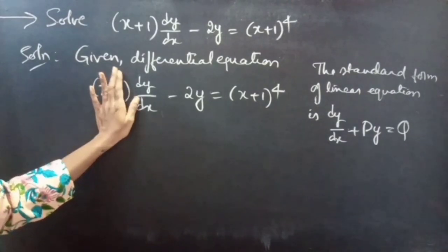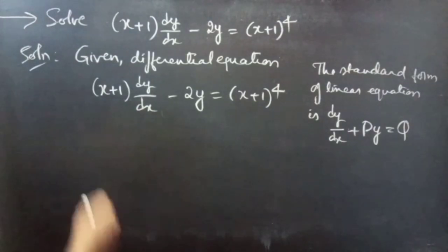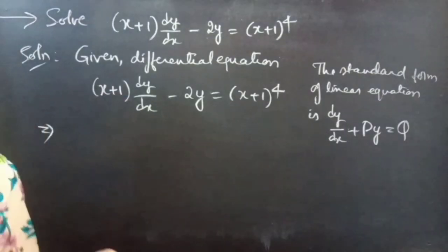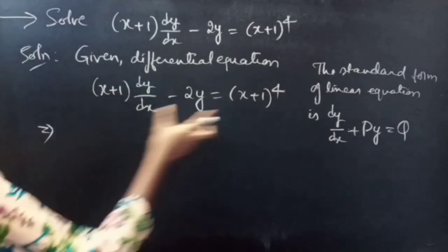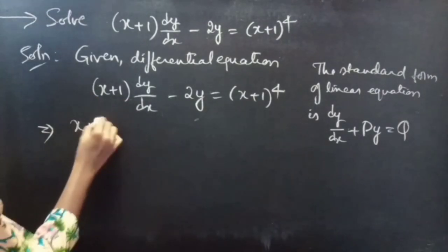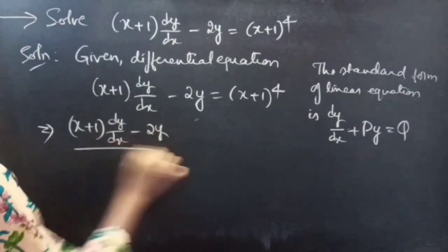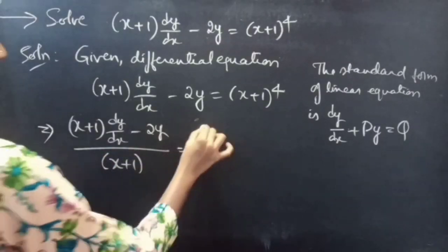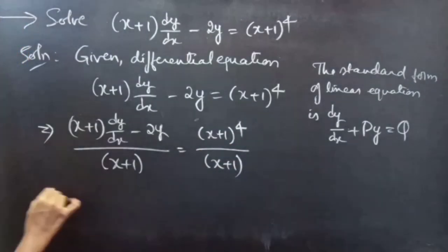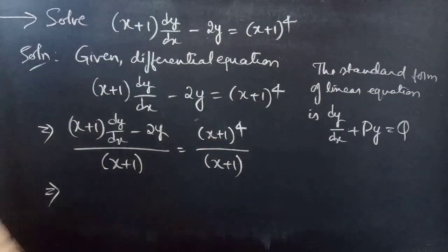Simply, we need to get 1 instead of (x+1) as the coefficient of dy/dx. For that purpose, we will simply divide the whole equation by (x+1): (x+1)·dy/dx divided by (x+1), minus 2y/(x+1), equals (x+1)^4 divided by (x+1). Then one (x+1) gets cancelled and you will get (x+1)^3.